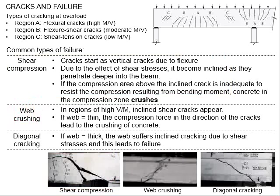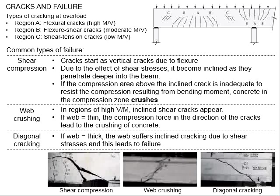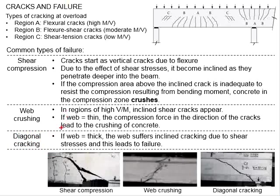Web crushing failure normally appears in regions of high shear load relative to moment. It appears due to a thin web, where the compressive force in the direction of the cracks leads to crushing of concrete within the web. The third type of failure is diagonal cracking, which normally appears on a thick web. In this case, no crushing appears within the web due to adequate cross-sectional area; however, the member suffers inclined cracking due to shear stress, leading to failure of the member.